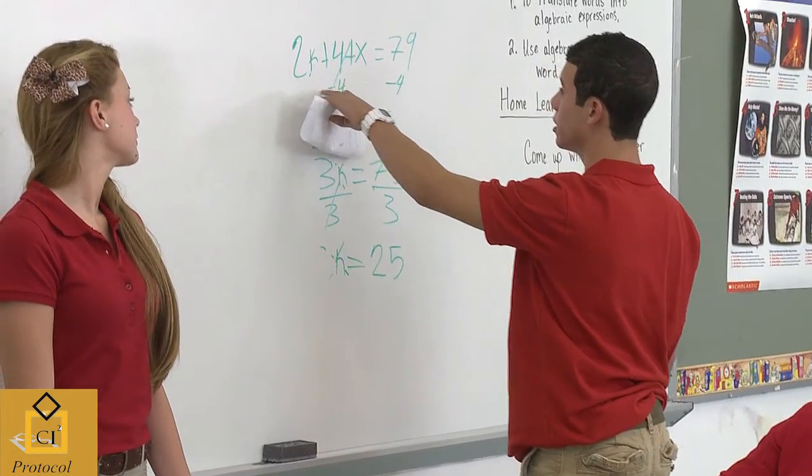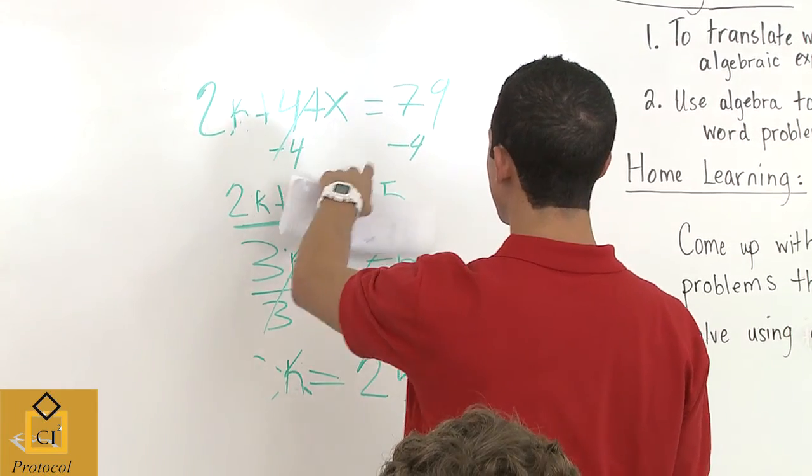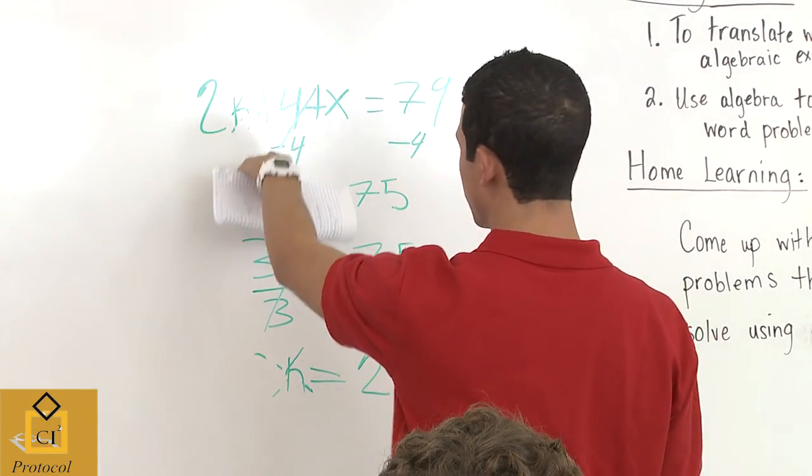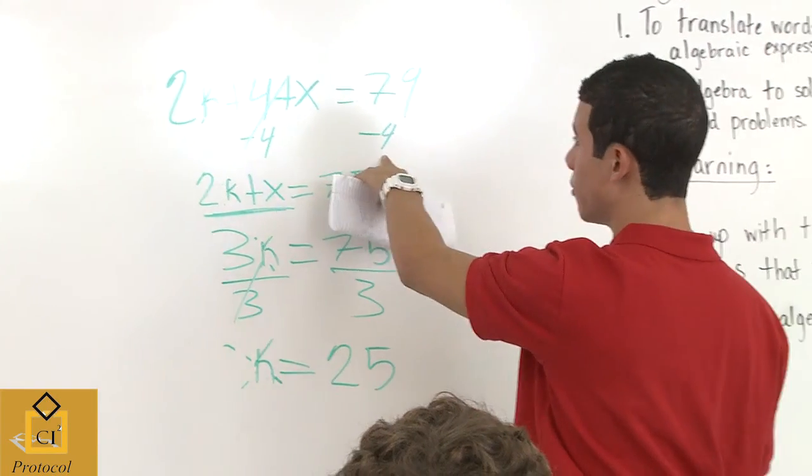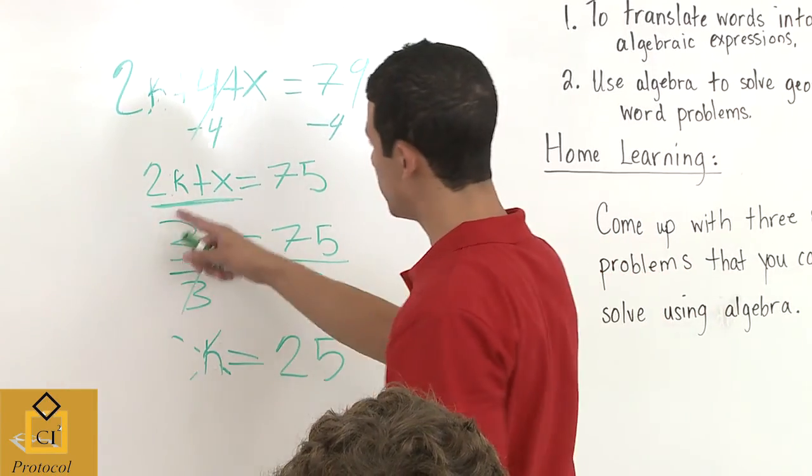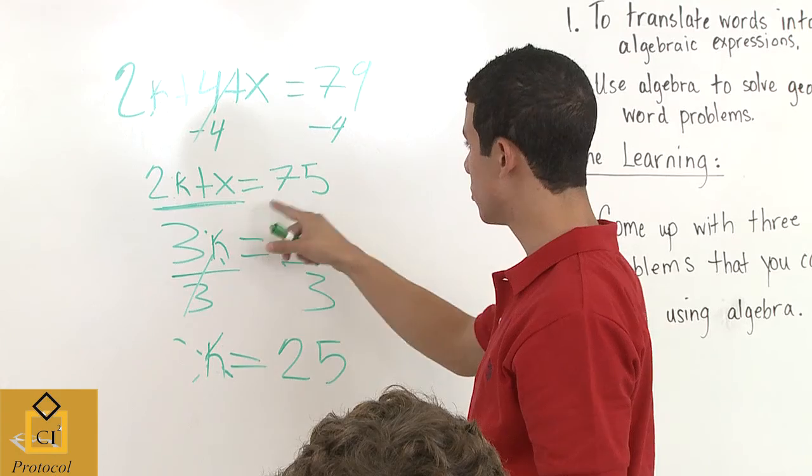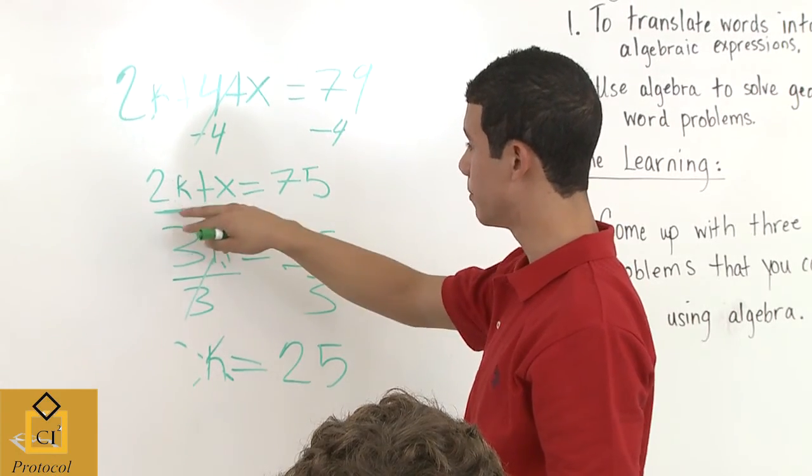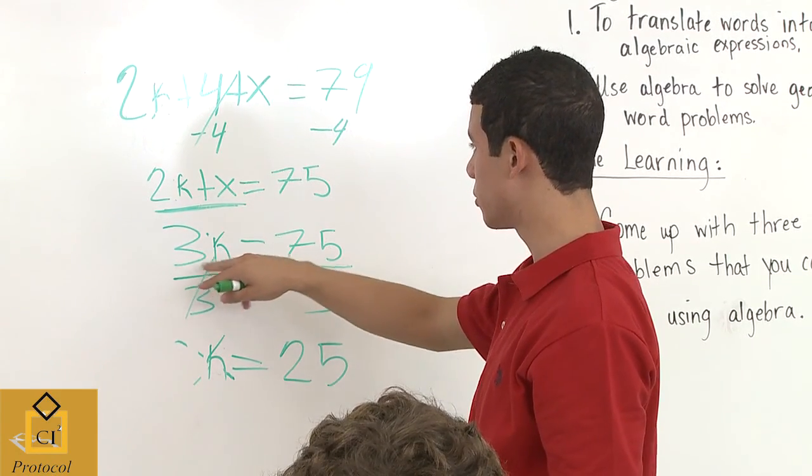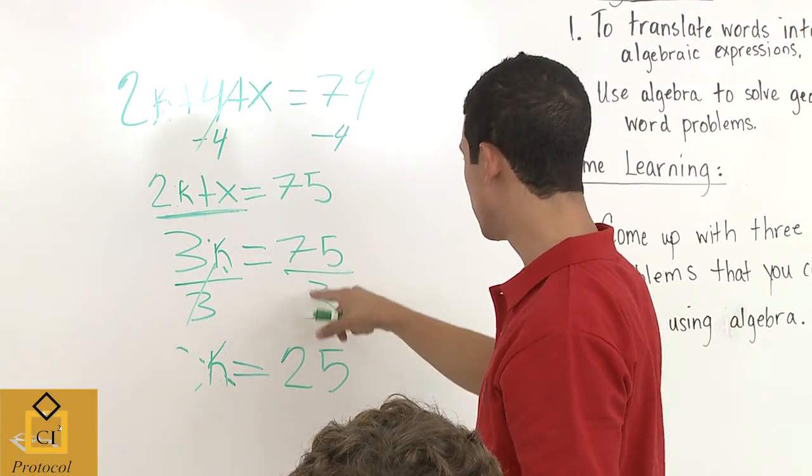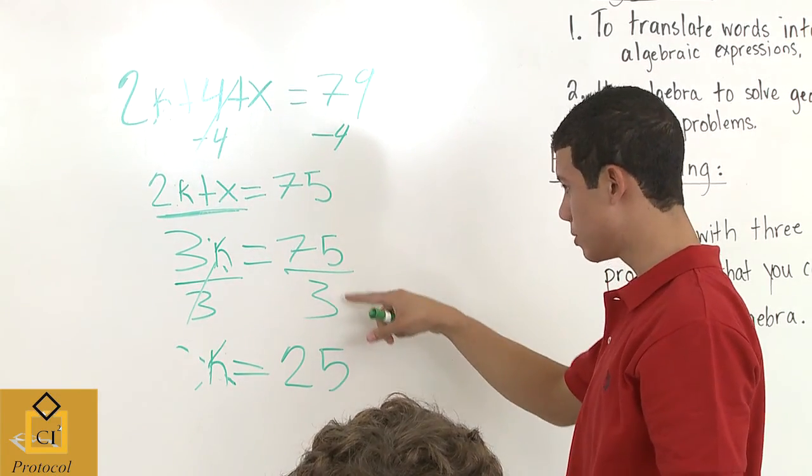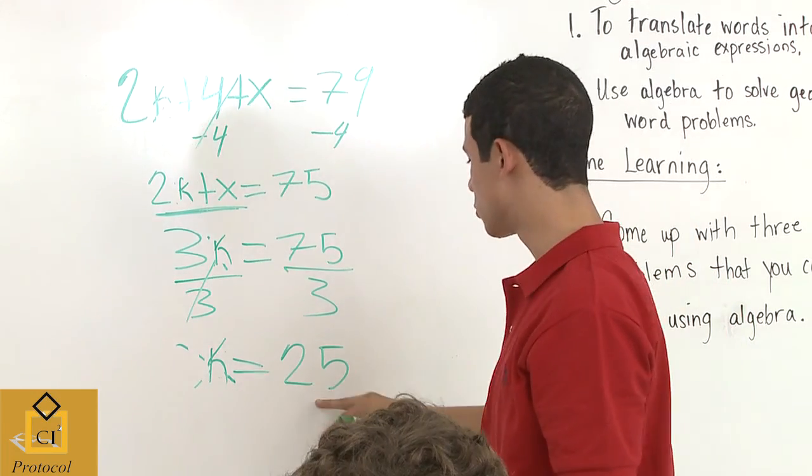Okay. I put 2k plus 4 plus x and equals 79. And then I put negative 4 to the other side, negative 4. I scratch that out. I put 2k plus x equals 75. And then I add them. So it gives me 3k equals 75. So then I divide it with 3 with 75. And I got k equals 25.